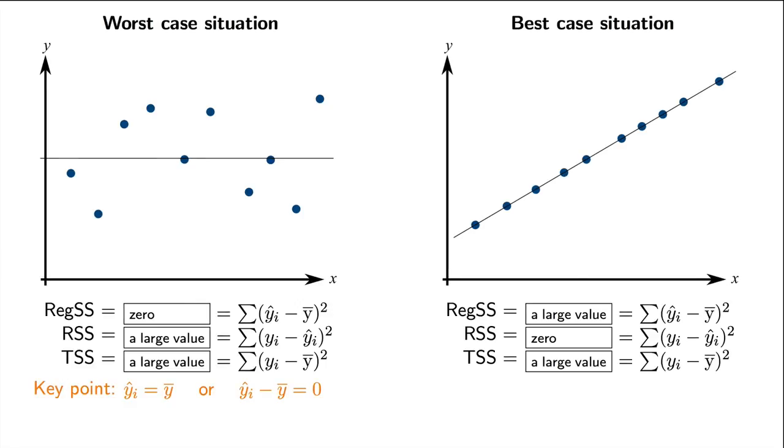So the regression sum of squares is zero, there is nothing to predict in this extreme situation. And because y-hat is equal to y-bar, we have that the residual sum of squares will be some large positive value. Remember, we are summing squares, so it has to be positive.